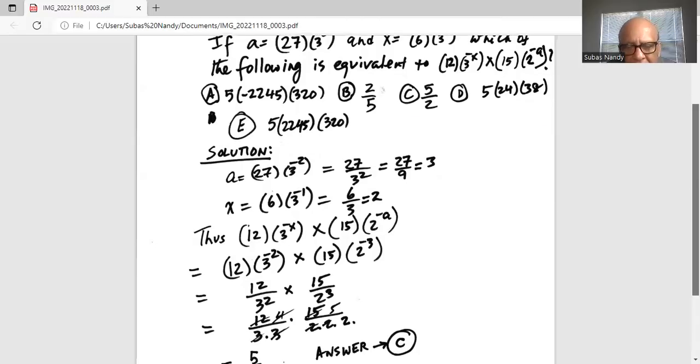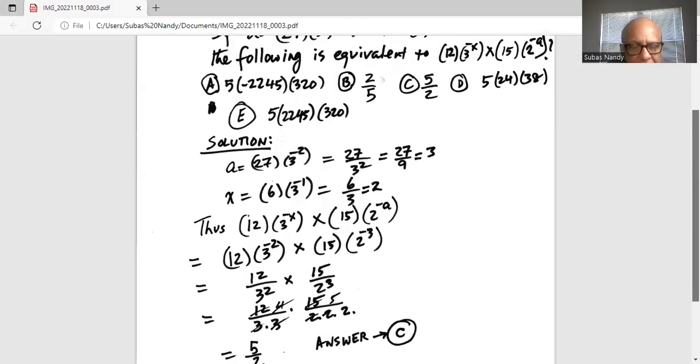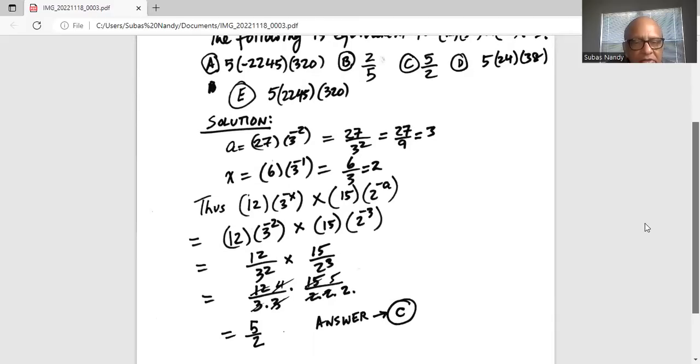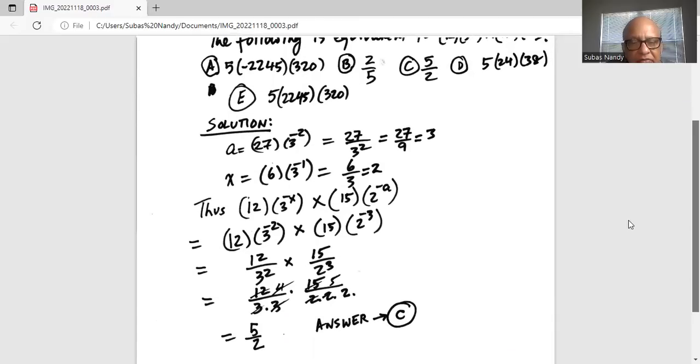Now we write everything out. So it is 12 divided by 3 times 3 multiplied by 15 divided by 2 times 2 times 2. First, we will cancel 3 in the denominator with 12 in the numerator to get 4 in the numerator. Then the other 3 will cancel with 15 to get 5 in the numerator. The 4 in the numerator will cancel with 2 2's in the denominator. What are we left with? We are left with a 5 in the numerator and 2 in the denominator, which is 5 over 2.